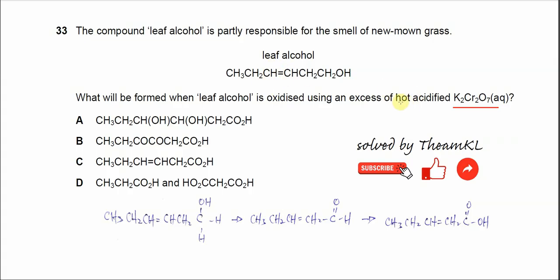So when we use hot acidified potassium dichromate here, it will not oxidize this C=C bond, so it will stay. Only this primary alcohol will be oxidized to form the carboxylic acid.